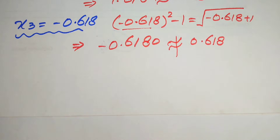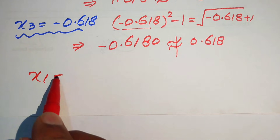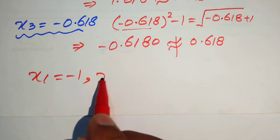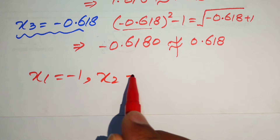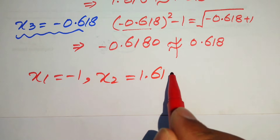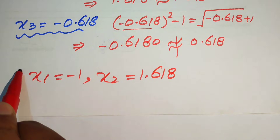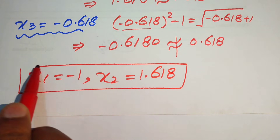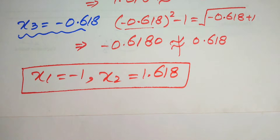Finally, the two valid roots of the given equation are x1 equals minus 1 and x2 equals 1.618. These are the final answers. Thank you so much for watching this video; please subscribe to my channel for more exciting videos.